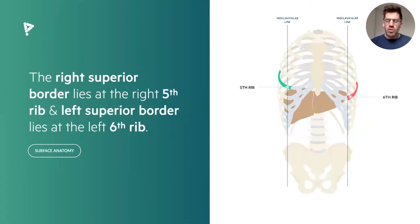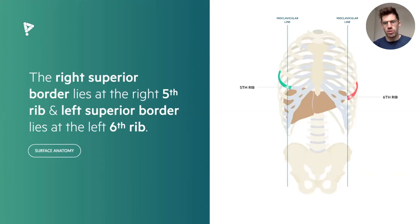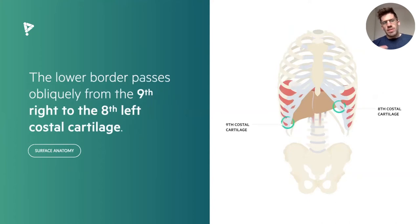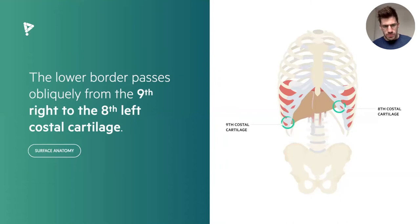Looking at the surface anatomy, you can see the skeletal system with the liver inside. The right superior border of the liver lies at the right fifth rib, about two centimetres from the midclavicular line. The left superior border lies around the left sixth rib by the midclavicular line. So it's much higher up than we actually think when looking at the surface anatomy of the abdomen. The lower border passes obliquely from the ninth costal cartilage up to the eighth left costal cartilage. It's quite a big structure that goes a long way across the abdomen — you can see why this is the biggest structure within the abdominal cavity.